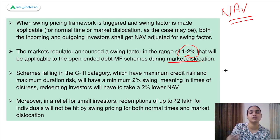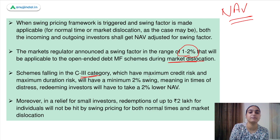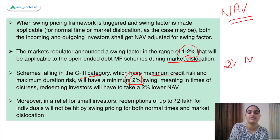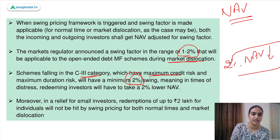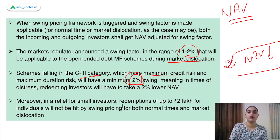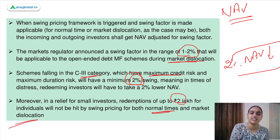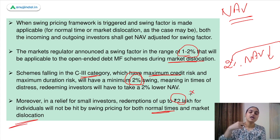Category C3, which has the maximum risk, will have a minimum 2% swing applied — meaning the NAV will be reduced by at least 2% for investors leaving the market. There is also relief for small investors: an exemption of Rs 2 lakhs is given regardless of whether it is normal times or a dislocated market.